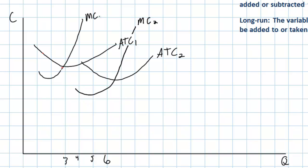So there's marginal cost two. Now, if this firm wishes to produce six airplanes, it can do so at a lower average total cost — we call that C1 — than it would have experienced if it were still producing in only one factory. Without this second factory, the average total cost of six airplanes would have been much higher, as we can see at C2.